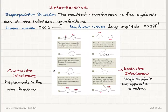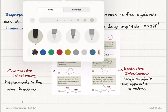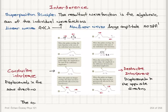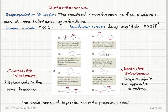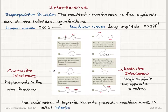Interference is the combination of separate waves to produce a resultant wave. We have two types: displacements in the same direction give constructive interference, and displacements in the opposite direction give destructive interference.